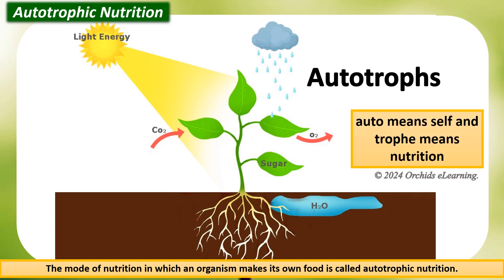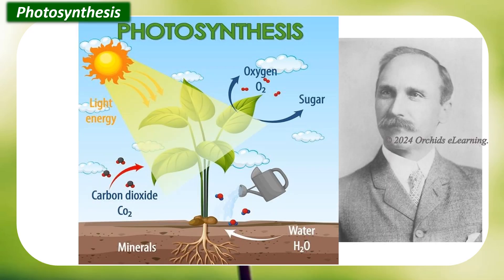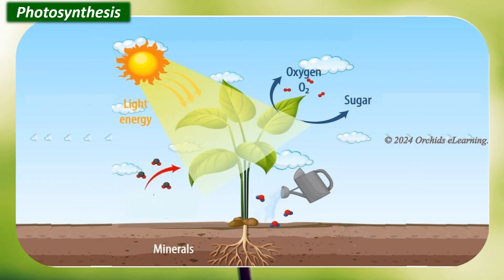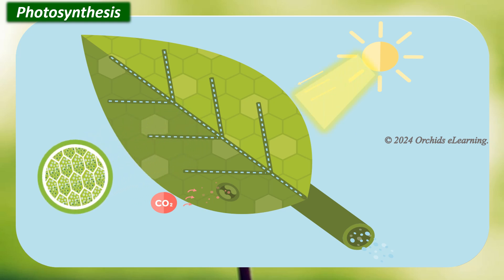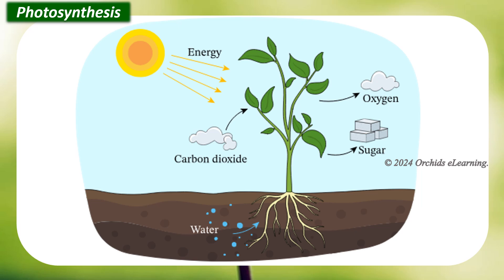Auto means self and trophy means nutrition. The term photosynthesis was coined by Charles Reed Burns in 1893. Plants take in carbon dioxide from the atmosphere and water from the soil. Water reacts with carbon dioxide in the presence of light — for example, sunlight — and chlorophyll to produce sugar and oxygen.